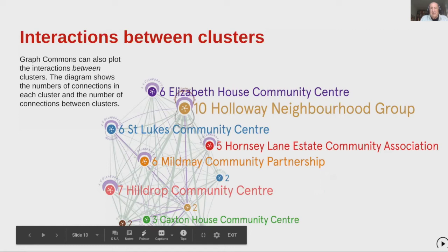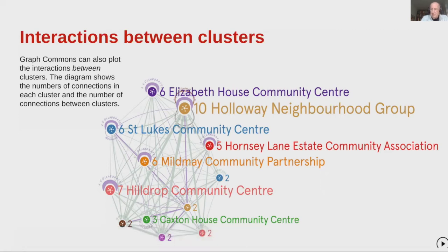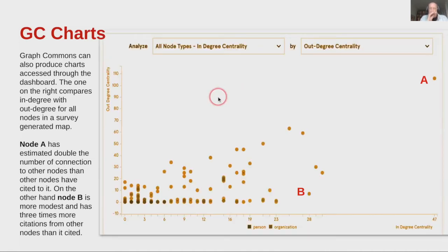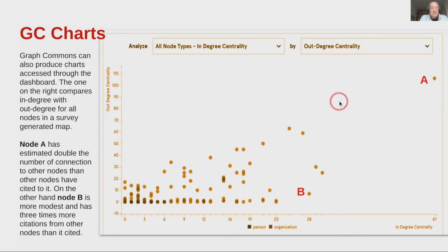Graph Commons will also take each of the clusters, represent them as a node, and show the connections between those clusters — so you can see where stronger connections develop between various clusters. This is all based on how they connect, not on the characteristics of nodes at all. Graph Commons will also generate charts based on the attributes of the map. We've looked at all the node types in terms of their in-degree centrality against their out-degree centrality. For instance, node A has almost double the number of indications that they connect to other nodes than other nodes have indicated to it — possibly totally overestimating their popularity.